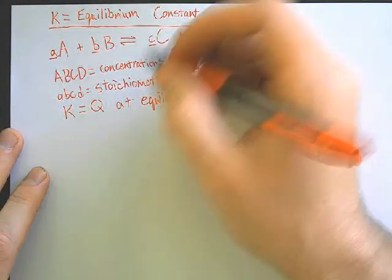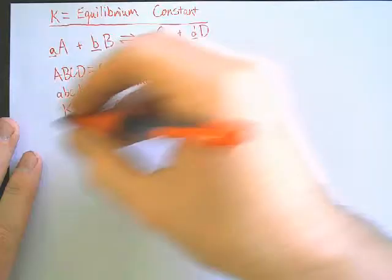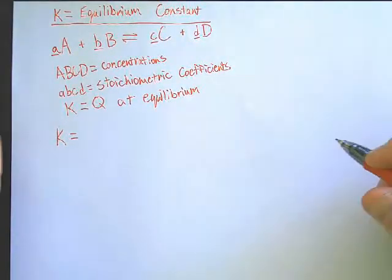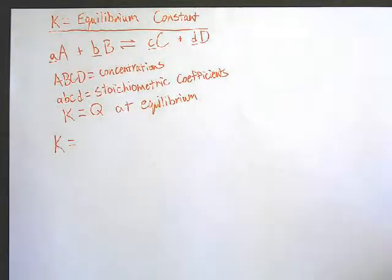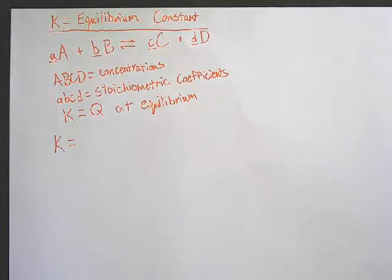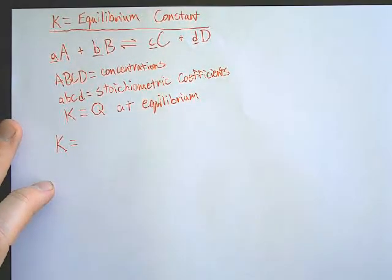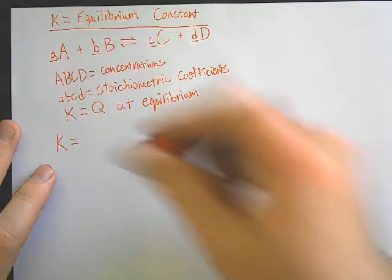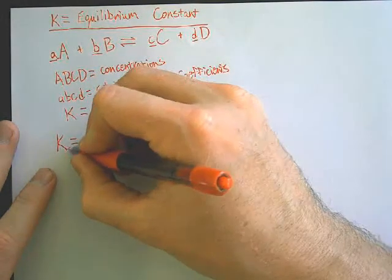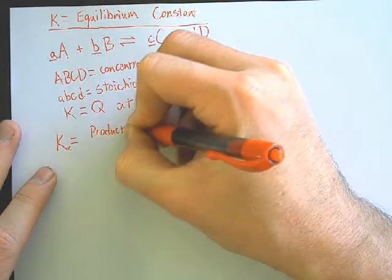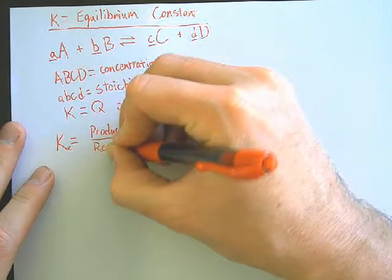What K is — K is going to be your constant. Do constants change? No, they're constant — they never change, except in certain cases. We'll talk about that. So Kc equals your products over reactants.